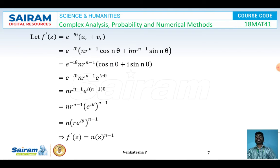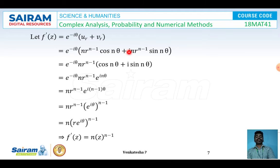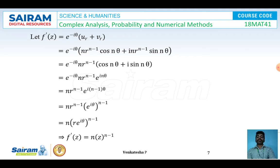To find f'(z) using the polar formula: f'(z) = e^(-iθ)(u_r + i·v_r). Substituting u_r and v_r: f'(z) = e^(-iθ)·n·r^(n-1)(cos nθ + i sin nθ) = e^(-iθ)·n·r^(n-1)·e^(inθ) = n·r^(n-1)·e^(i(n-1)θ) = n·(r·e^(iθ))^(n-1) = n·z^(n-1), confirming the standard differentiation result.